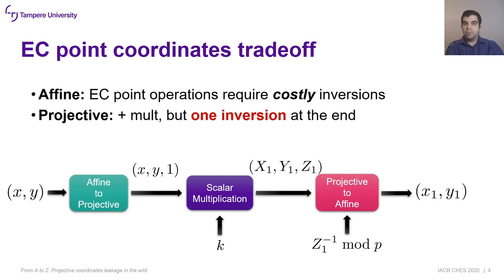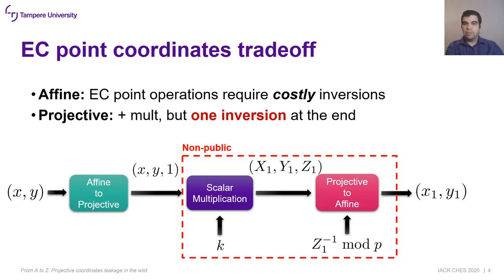The scalar multiplication path will look like this. The starting point is converted to projective coordinates, then the scalar multiplication takes place, and the output point is converted back to affine coordinates. Note that the projective-to-affine conversion requires a modular inversion computation, which represents a potential target for side-channel attacks. Usually, EC protocols use affine coordinates, making the intermediate representation not visible to an adversary.